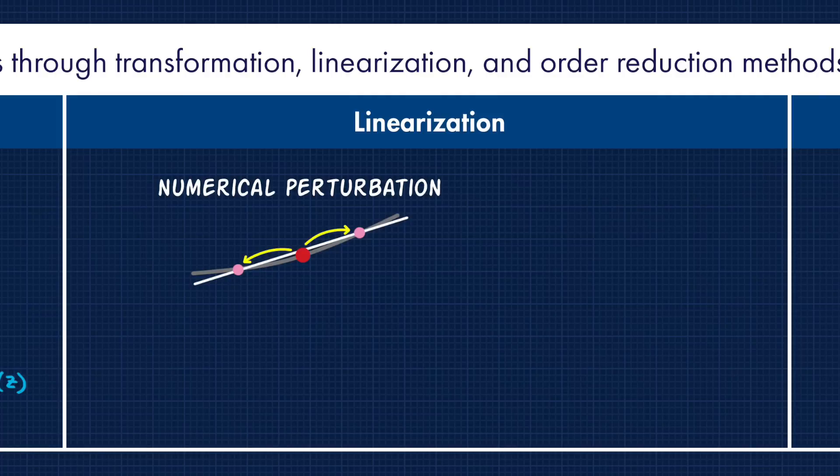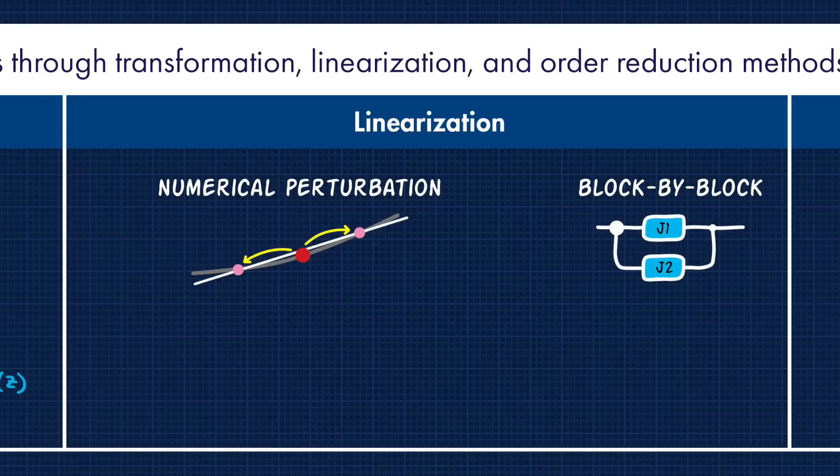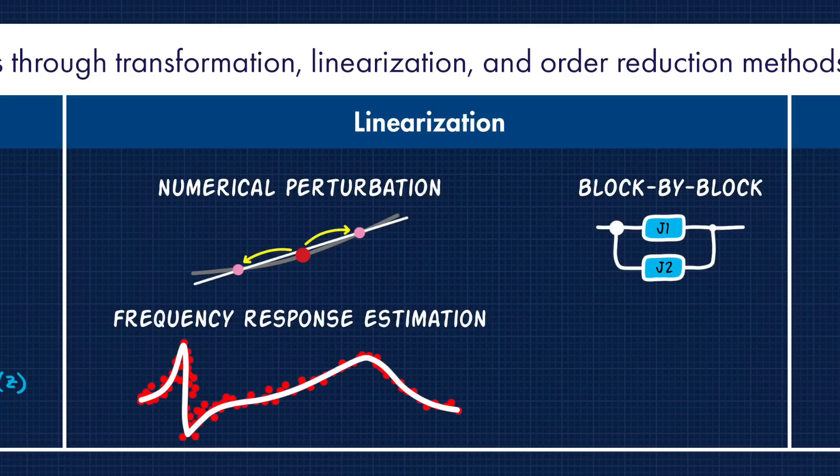This can be done through numerical perturbation, where you start at the operating point, and then you perturb the parameters in both directions to find the slope. Linearization can also be done block by block, where you specify the Jacobian for each block within your Simulink model. You can linearize also with frequency response estimation, where you excite your system at specific frequencies, and then measure the response in terms of gain and phase shift. And like we've seen before, there's an app for this. The model linearizer app can help you through the entire linearization process.